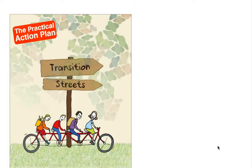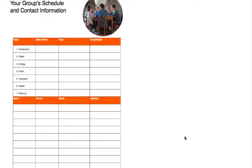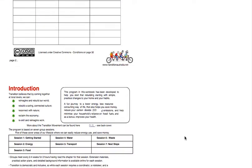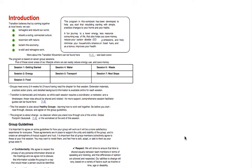How do you take the Transition Streets Handbook further? As you work through the book, you'll find extra references like 1.3 or 1.2 in brackets. These refer to extension exercises that are on the web page.